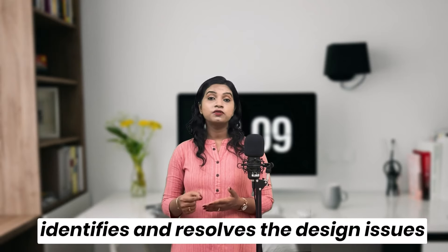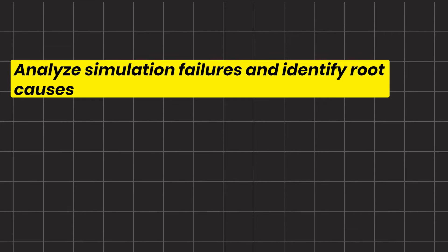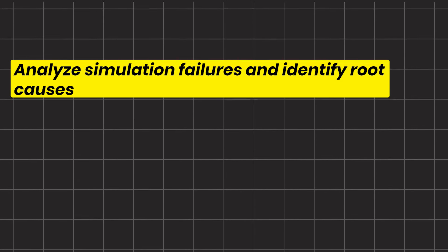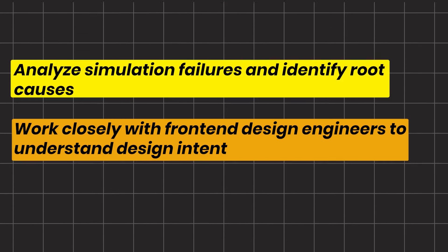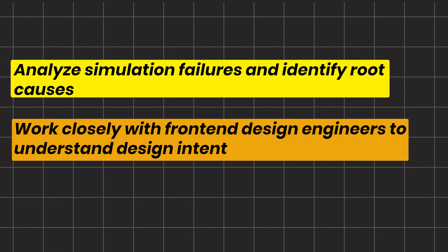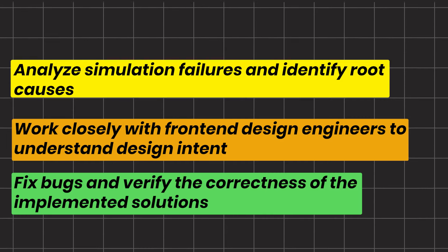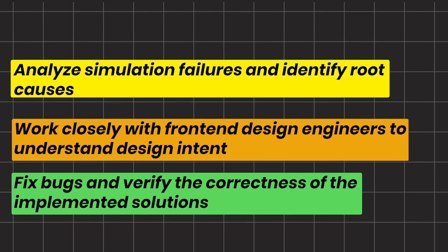Formal verification mathematically proves that the design meets all its specifications. They apply formal verification techniques to validate the critical design paths and integrate formal methods with traditional simulation-based verification. Next is debugging — which identifies and resolves design issues. They analyze simulation failures, identify root causes, and work closely with front-end design engineers to understand the design intent.